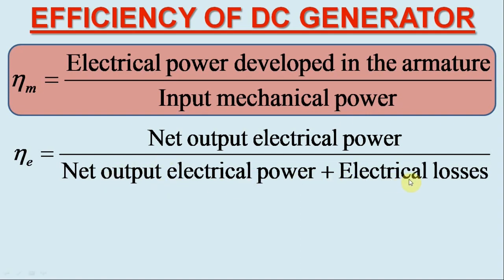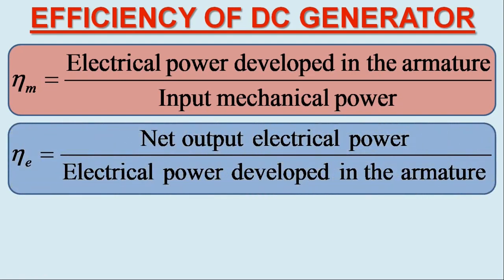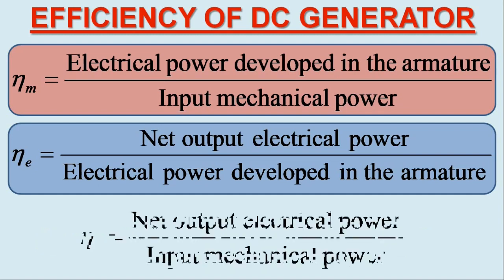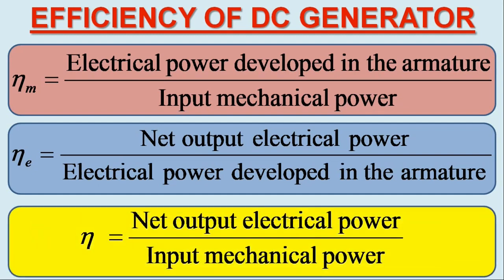The term net output electrical power plus electrical losses is nothing but the electrical power developed in the armature, Eg×Ia. So the electrical efficiency is written as net output electrical power over electrical power developed in the armature. Multiplying these two efficiencies, we may determine the overall or commercial efficiency of the DC generator, which is net output electrical power over input mechanical power.